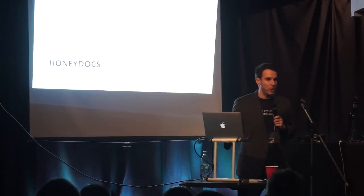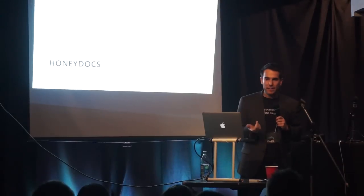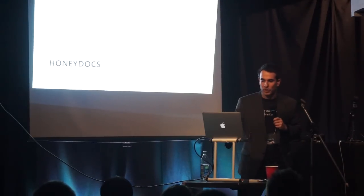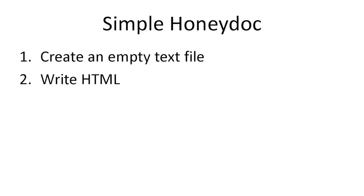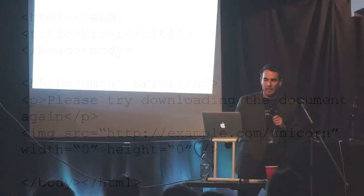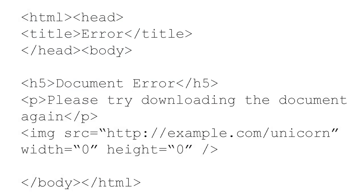I'm going to show you quickly how to create a very basic honey document. This technique works on Windows, Mac, and Linux — it's great and very simple. All you have to do is start with an empty text file and write a little bit of HTML inside, really just about six lines of code. There are two components: the text, and the second line from the bottom is actually an image tag. If you ran this document in a browser, the browser would try to fetch that image — that would be the first thing it does. It doesn't matter if that URL exists or not — that server would be contacted.